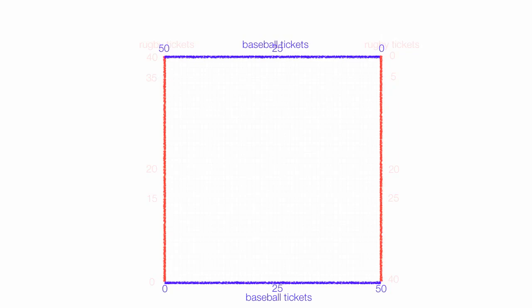Let me get rid of baseball tickets at the top. It's getting a little messy. Just like before, if I have 5 baseball tickets on the bottom, I'll have 45 baseball tickets at the top. Every point has to add up to 50. The top and bottom axis always add up to 50.